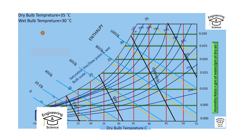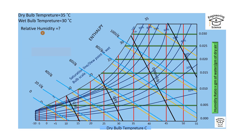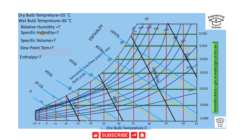First we have to have the parameters. To find all five parameters, we have dry bulb temperature which is 35 degrees Celsius and wet bulb temperature which is 30 degrees Celsius. From these we have to find relative humidity, specific humidity, specific volume, dew point temperature, and enthalpy.